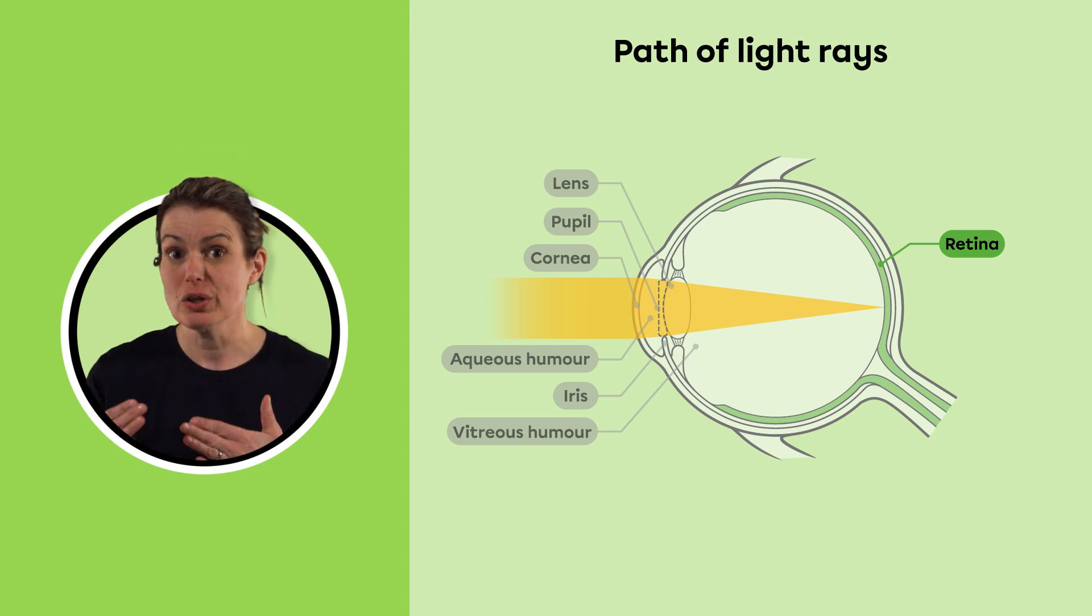These photoreceptors are called cones and rods. The cones are mainly concentrated in an area called the yellow spot. They enable color vision.